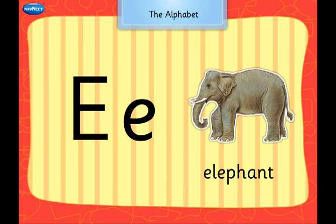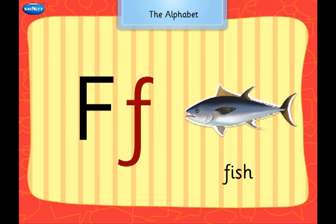E says E, E, Elephant. F says F, F, Fish.